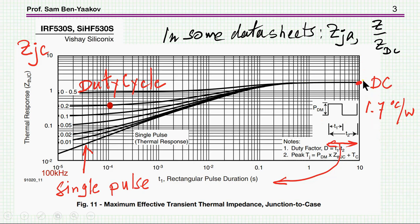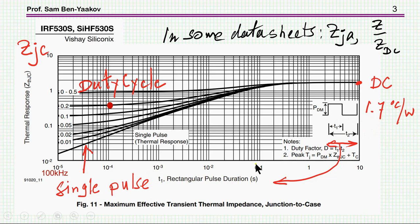The DC value is reached for a very long pulse where it reaches equilibrium. So this is in actual values of thermal resistance or impedance, and in some cases it will be normalized. This is the duty cycle, and this is the special case of a single pulse. For a single pulse of 1 millisecond, the equivalent impedance is 0.1 as compared to 1.7, because of the heat capacity of the device.